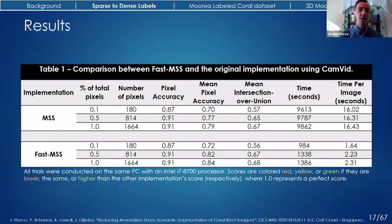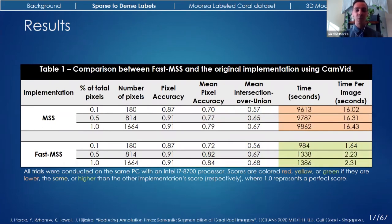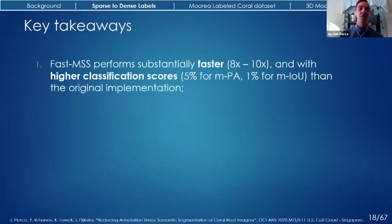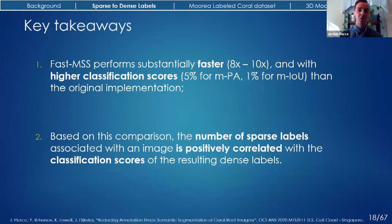For the results, you can see in Table 1 the percentage and number of sparse labels synthesized before each trial, the classification scores, and the speed of both implementations. For pixel accuracy, there was no difference between either implementation for any of the three trials. For mean pixel accuracy, Fast MSS performs better in all three, but only in the last two for mean intersection over union. With regards to speed, Fast MSS performs significantly faster — anywhere between eight and ten times. The key takeaways: Fast MSS is faster and achieves higher classification scores, and there seems to be a positive correlation between the number of sparse labels and the resulting classification scores.